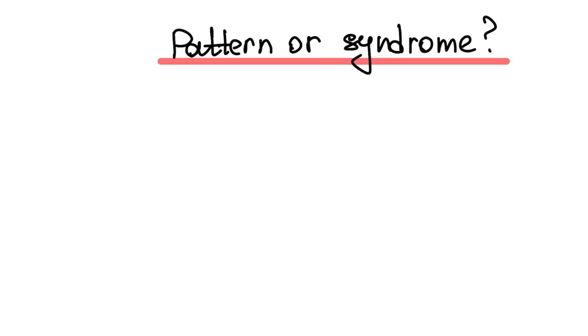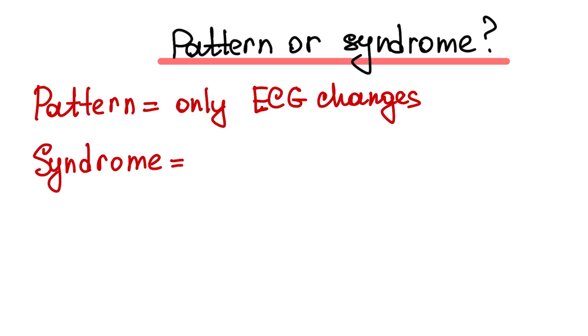What is the difference between early repolarization syndrome and pattern? Pattern is ECG features of early repolarization without clinical symptoms or arrhythmias. Syndrome is ECG features of early repolarization plus symptomatic arrhythmias.